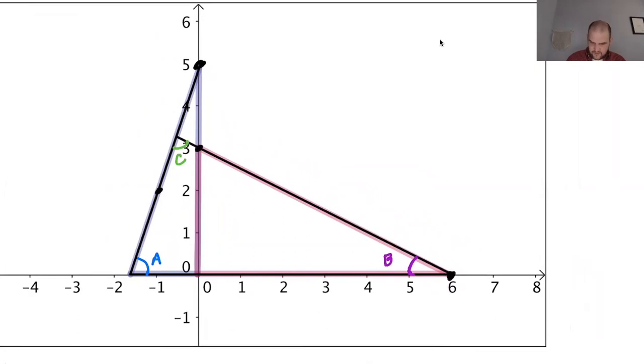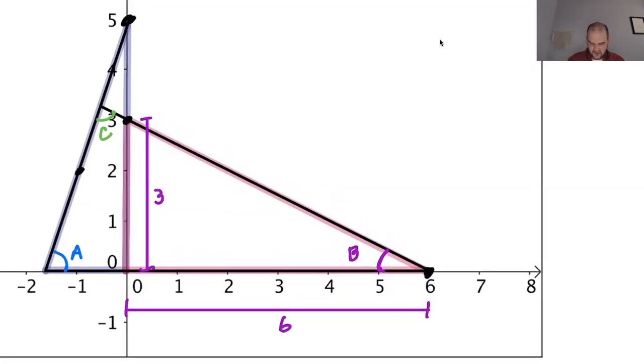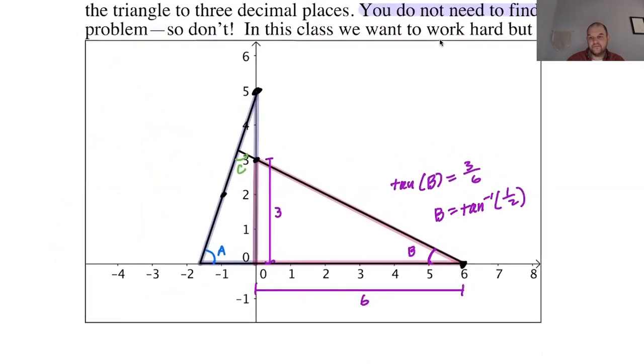All right, I think that angle B is maybe the easiest one to find because this section here, segment rather, is 6. And this segment, which is the side of the triangle is 3, which means that the tangent of B opposite over adjacent is 3 over 6. So the tangent of B is 3 over 6, which means B should be the inverse tangent of 1 half. Okay, that seems good. I mean, I didn't get a decimal yet, but that seems plausible.